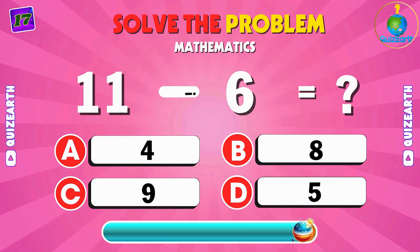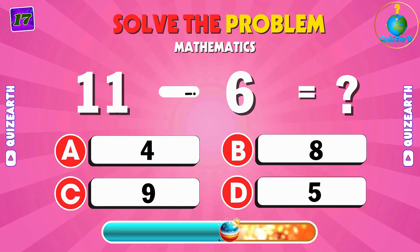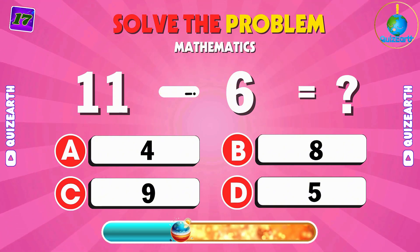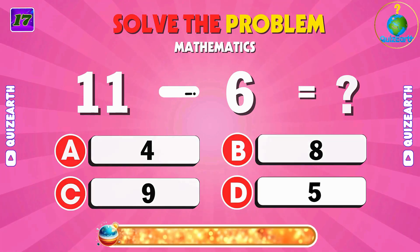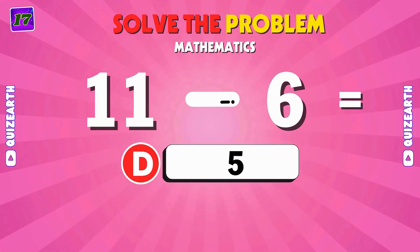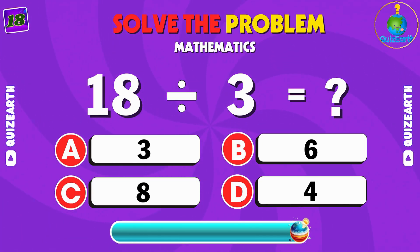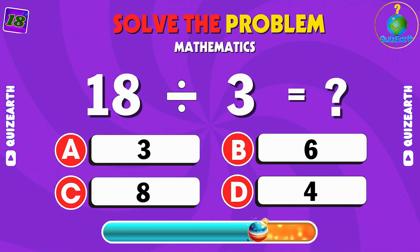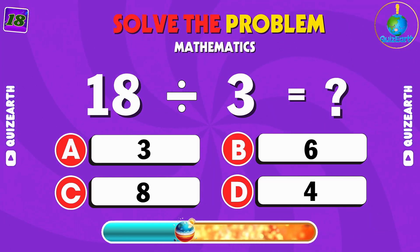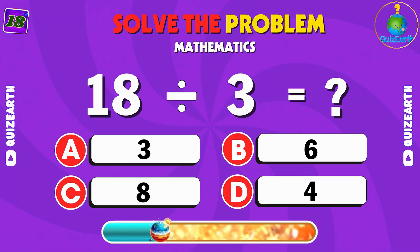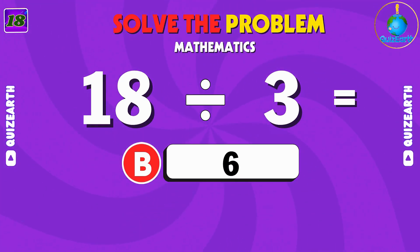Subtract 6 from 11 — can you find the answer fast? D: 5. Divide 10 by 3 — how many parts do you get? B: 6.